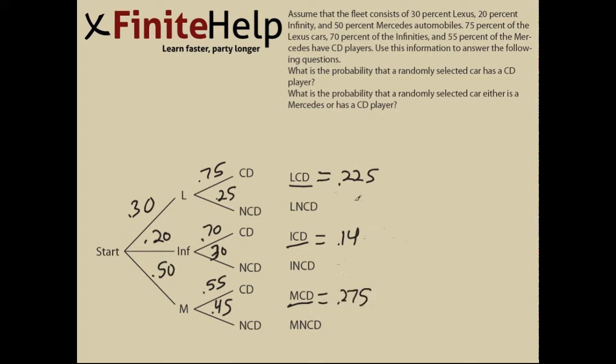Now we add all these together: 0.225 plus 0.14 plus 0.275 equals 0.64. That is the answer to the first part of the problem—the overall probability that a randomly selected car has a CD player.